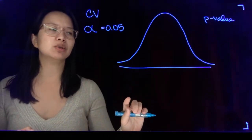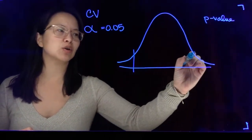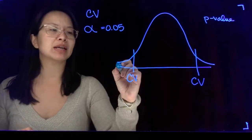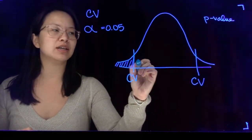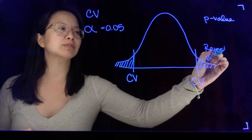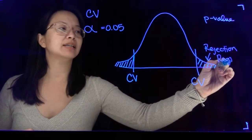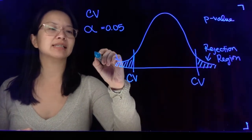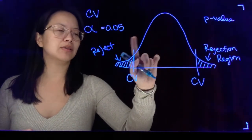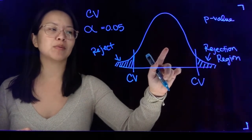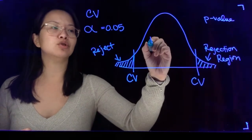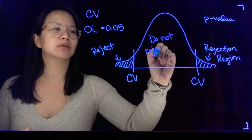Let's imagine we're working with a two-tail test. In the critical value approach we will have two critical values, or two chances of getting rejected. The little tails here are the rejection regions — that means our sample data was so special that it fell in those small tails, and if that's the case we will reject the null. On the flip side, if my sample mean or sample proportion, when turned into a test statistic, falls in the middle, we do not reject the null.